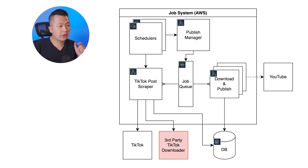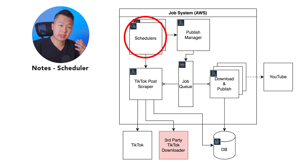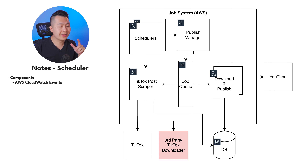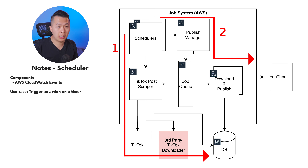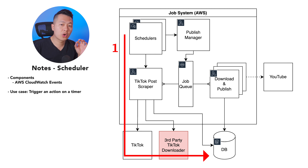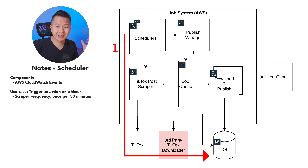Now that we know the building blocks, let's see how we piece them together. Starting top-left where the schedulers are implemented with CloudWatch Events — this is going to trigger two Lambda functions equating to our scraper pipeline and our publish job pipeline. In the scraper pipeline specifically, we're going to scrape TikTok videos once every 30 minutes. This is configurable, but we chose 30 minutes because the target audience — me — can maybe bang out two or three videos in that time. Before changing that frequency, we should probably look at TikTok's anti-abuse mechanisms, but 30 minutes is a good starting point.